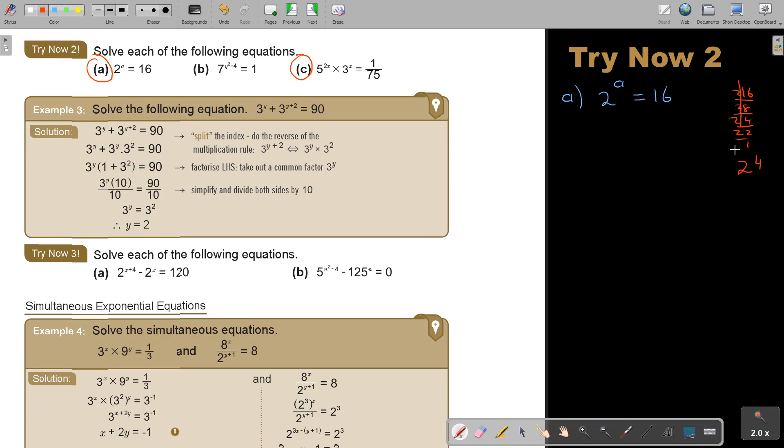So it's 2 to the power of 4. I'm going to say 2 to the power of A equals 2 to the power of 4. So therefore, A equals 4. Very easy. You can go back to ordinary level if you struggle with this.